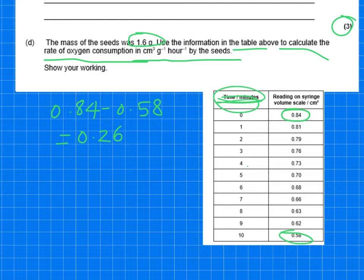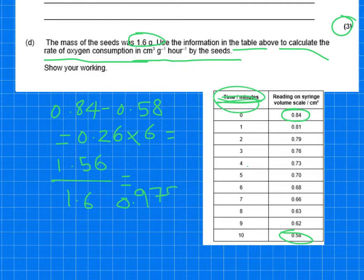That's luckily it's in centimetres cubed. So to get the hour, you times it by 6. So that'll give us 1.56. And then we need to look at per gram. So per gram, so you're going to divide that by 1.6. And that gives you the answer of 0.975. And that'll be centimetres cubed per gram per hour.